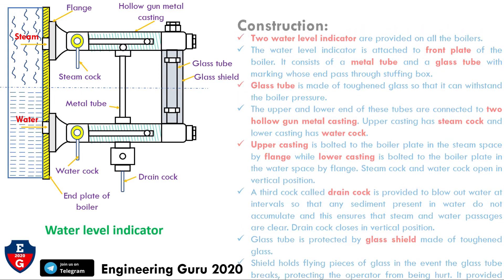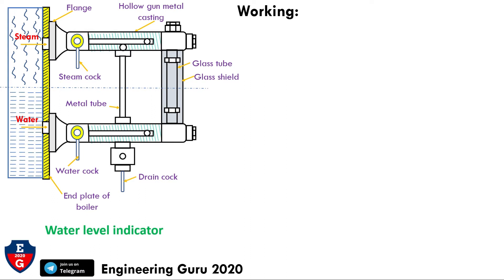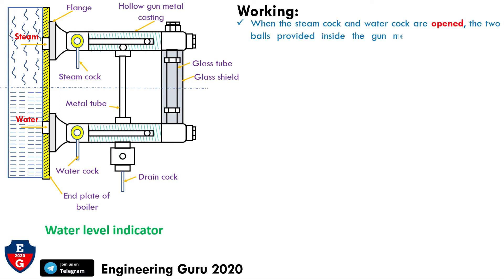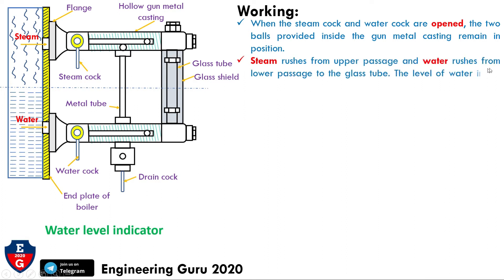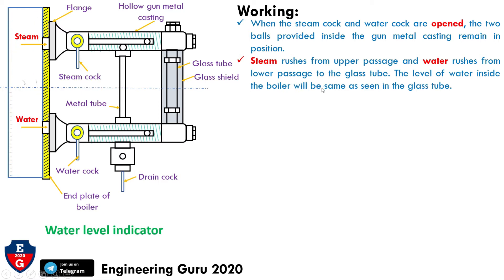Now for the working: when the steam cock and water cock are open — meaning they are in the vertical position — the two balls provided inside the gun metal casting remain in position. Steam rushes from the upper passage and water rushes from the lower passage into the glass tube. The water level inside the boiler will be the same as seen in the glass tube.